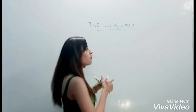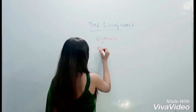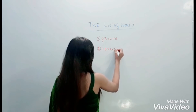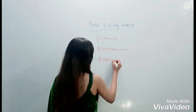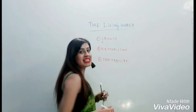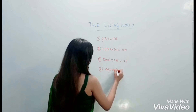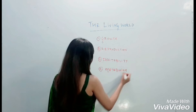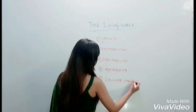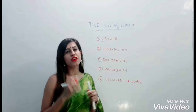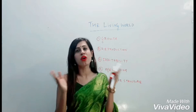The features of living organisms include growth, reproduction, consciousness — also called irritability or sensitivity or awareness — then metabolism, and cellular structure. We are going to deal with these features one by one, and we will also come to a conclusion as to whether they are the defining features of living organisms or not.